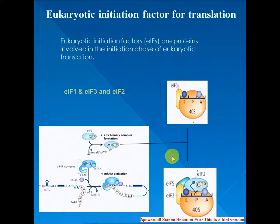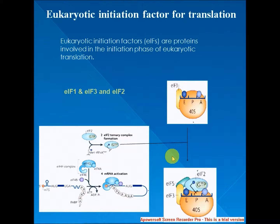EIF2 has three subunits: EIF2-alpha, beta, and gamma. The alpha subunit is of particular importance for cells that may need to turn off protein synthesis globally. When phosphorylated, it sequesters EIF2B — not to be confused with the beta subunit — which is a GEF. Without this GEF, GDP cannot be exchanged for GTP and translation is repressed. EIF2-alpha-induced translational repression occurs in reticulocytes when starved for iron. In addition, protein kinase R (PKR) phosphorylates EIF2-alpha when dsRNA is detected in many multicellular organisms, leading to cell death.